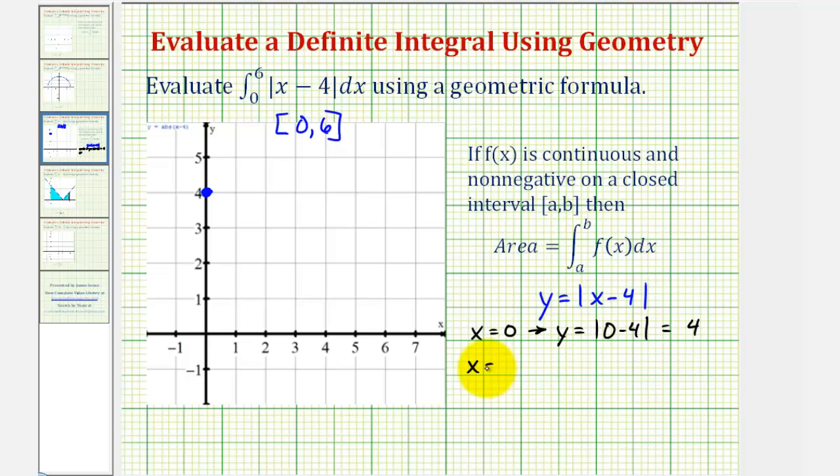Next, when x equals six, we would have y equals the absolute value of six minus four, and the absolute value of two is two. So our function also contains the point six, two, which is here.